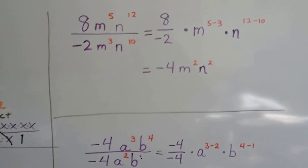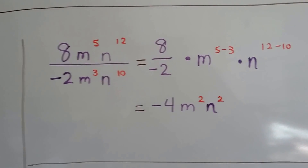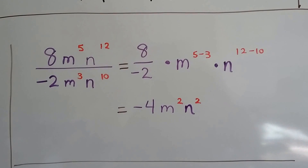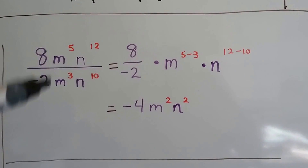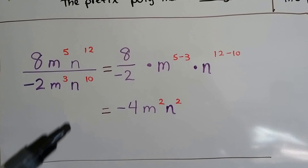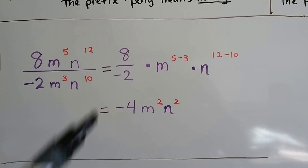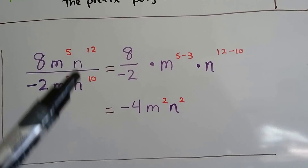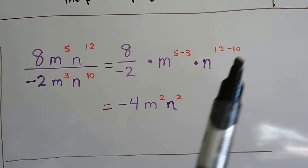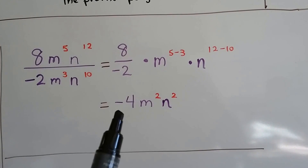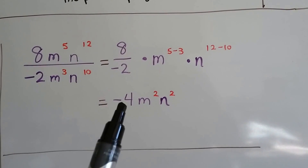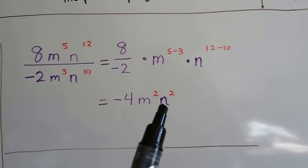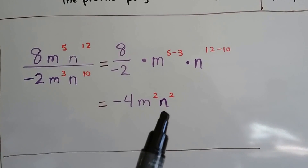Let's look at a more difficult one. We've got 8m to the fifth n to the twelfth divided by negative 2m to the third n to the tenth. We separate the numbers from the variables and get 8 over negative 2, then m to the (5 minus 3) and n to the (12 minus 10). Putting them back together: 8 divided by negative 2 is negative 4, m to the second power, and n to the second power.